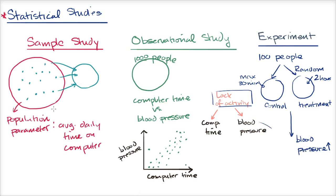To summarize: in a sample study, you're trying to estimate a population parameter. In an observational study, you're seeing if there's a correlation between two things, but you must be careful not to claim one causes the other because of possible confounding variables. In an experiment, you're trying to establish causality by randomly assigning your group to a control or treatment condition, which hopefully evenly distributes confounding variables, then you change how much of one variable each group gets and see if it drives the other variable. In the next videos, we'll do examples identifying these types of statistical studies and what we can conclude from them.